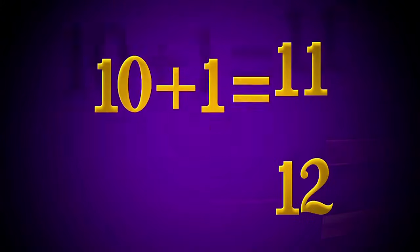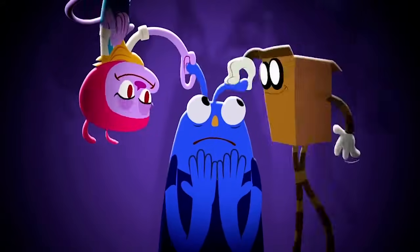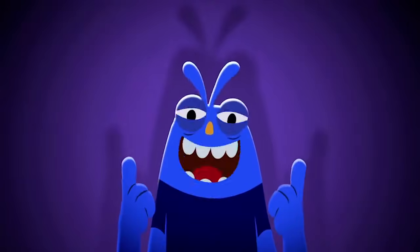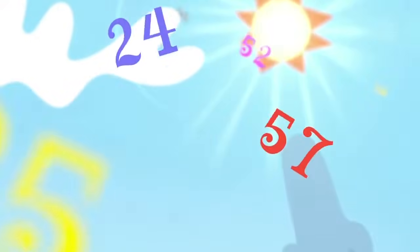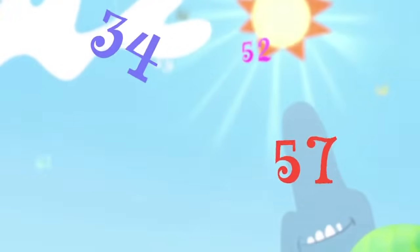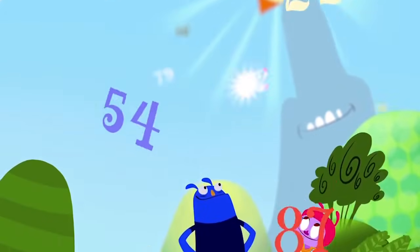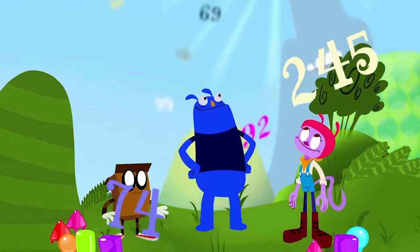11 and 12 is what you get adding 10 to 1 and 2. A secret I know that I will share and now I'm telling you: for every single number in the tens place, all you have to do is add a 1. That's how it's done!